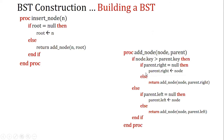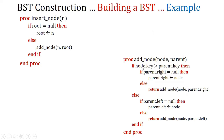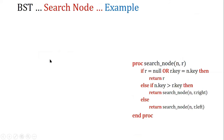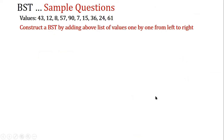This is the add node procedure — also referred to as insert node or add node. Next is the search node function. After this, there is a sample program that shows how to add elements to a BST from left to right and complete the operations.